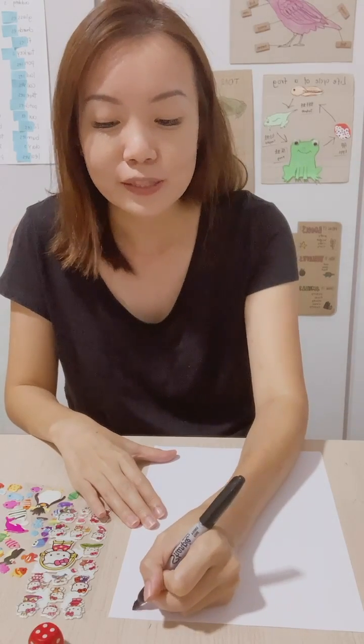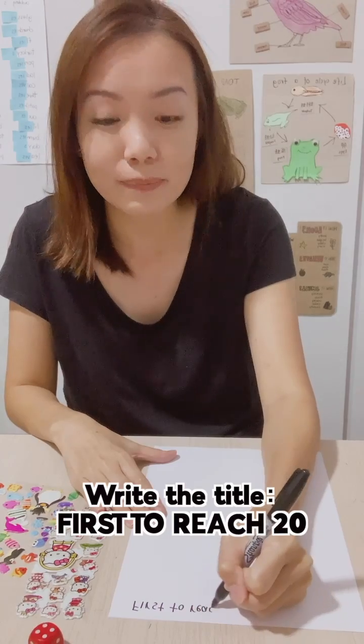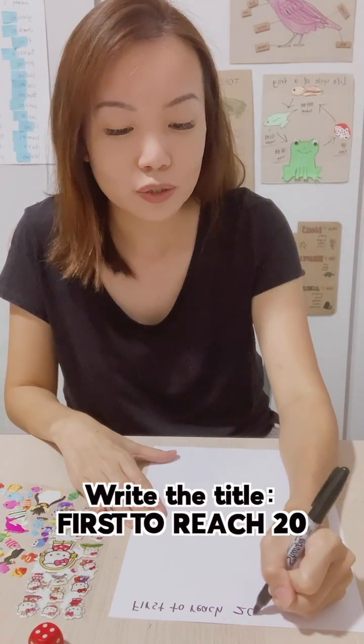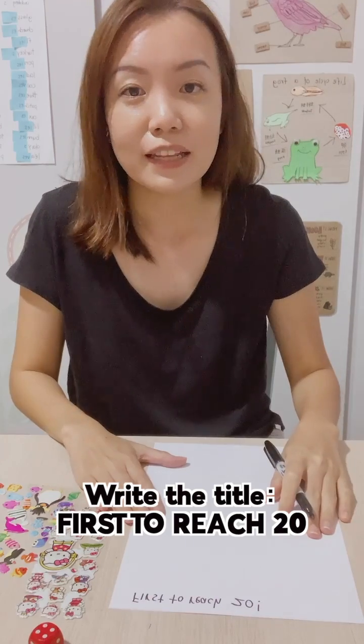20. So this is suitable for younger kids, maybe four or five years old. So what you want to do is write the title so they'll know what the game is about: First to Reach 20. All right, then